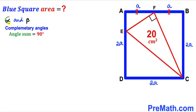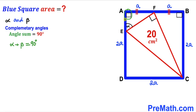Now let's assume that alpha and beta are two complementary angles — in other words, alpha plus beta equals 90 degrees. In triangle EAF, if I label this angle alpha, and since we have a 90-degree angle from the square, this angle must be beta. Similarly, this angle must be alpha, and this is again a 90-degree angle.